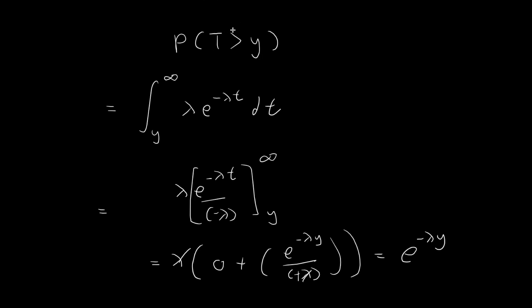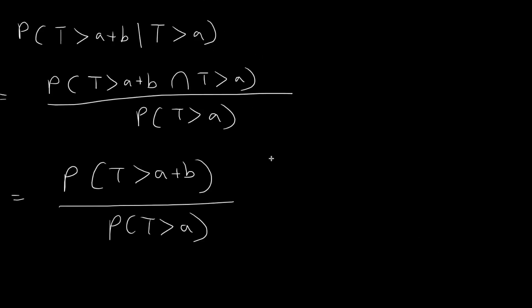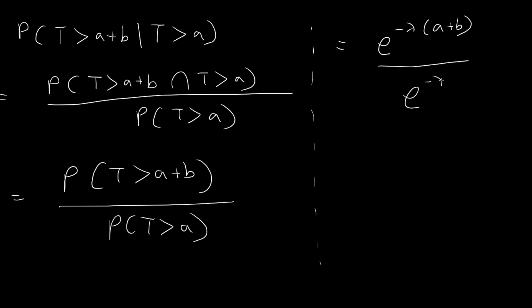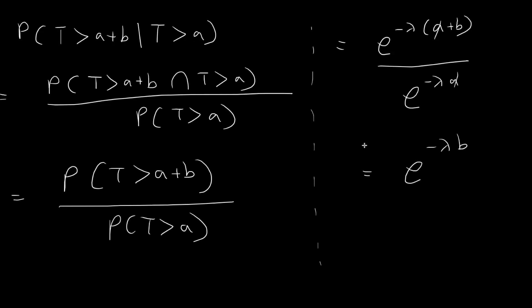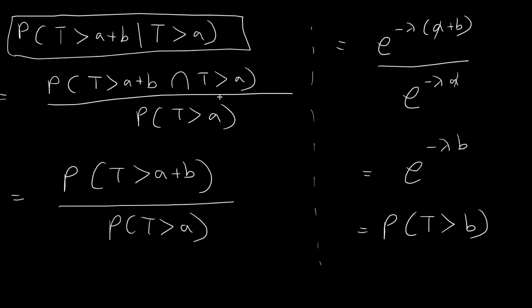Now we're ready to use the formula we just derived. We know that the probability T is larger than y equals e to the power of negative lambda y. Plugging this in, the numerator becomes e to the power of negative lambda times a plus b, and the denominator becomes e to the power of negative lambda times a. These conveniently cancel out, and in the end we get e to the power of negative lambda b. Going back to our formula, e to the power of negative lambda b is just equal to the probability that T is larger than b. So we started from the left-hand side expression and arrived at our desired result.